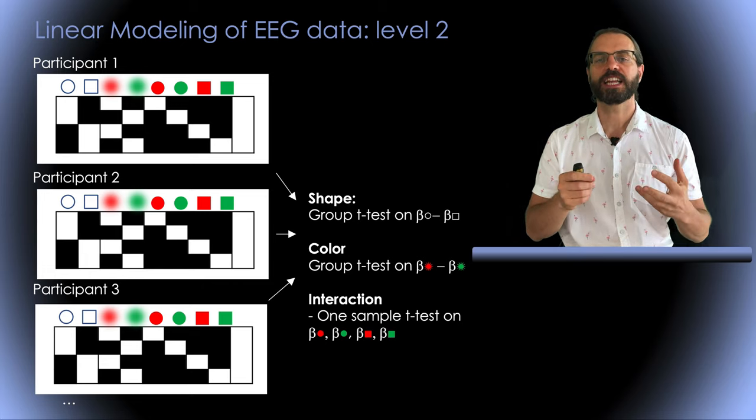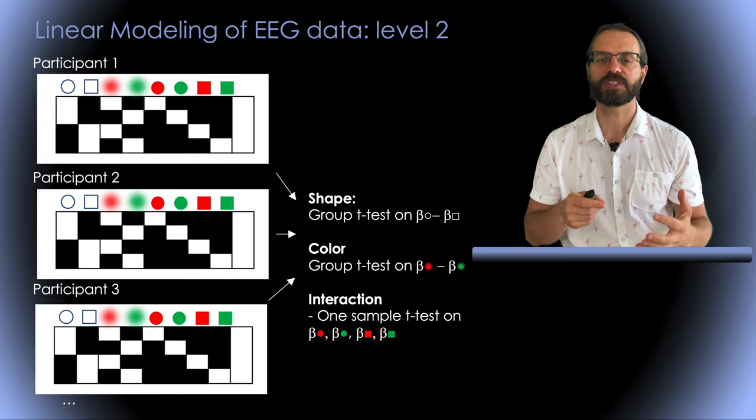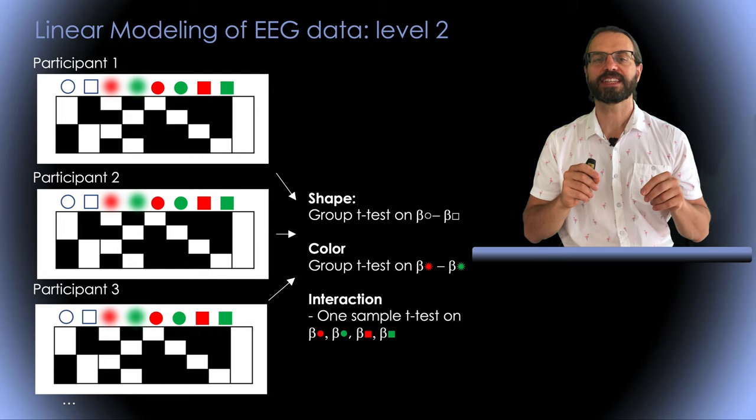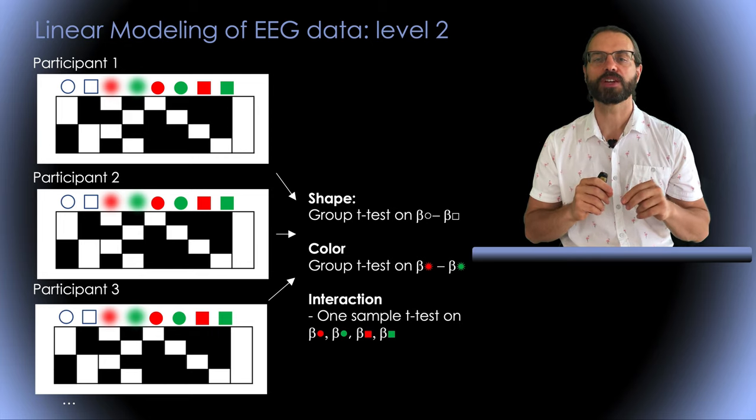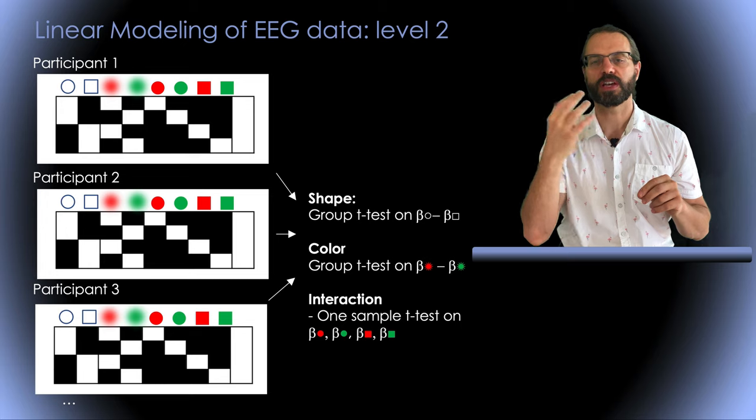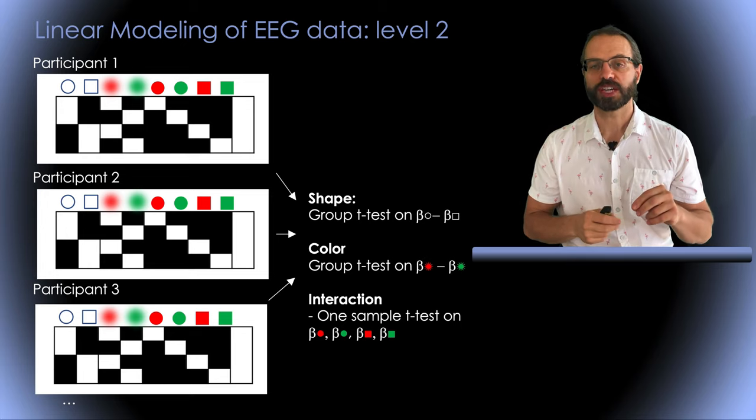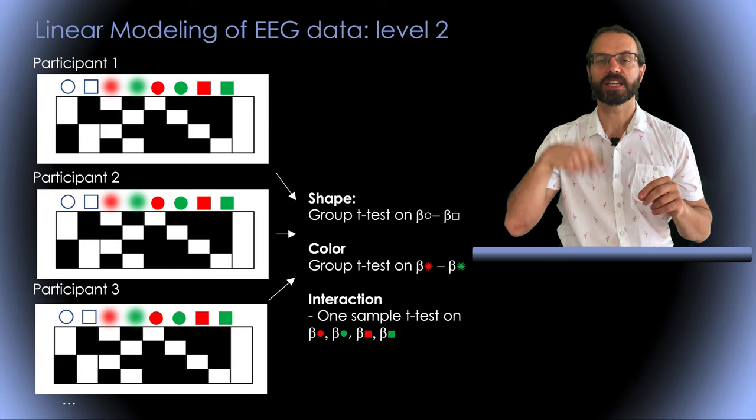However, at the second level, instead of a standard GLM, Cyril Pernet is using Hotelling, a statistical test, which do not need to be corrected for sphericity of the data and for potential correlations between measures. I invite you to look at the relevant publications in the link in the description.